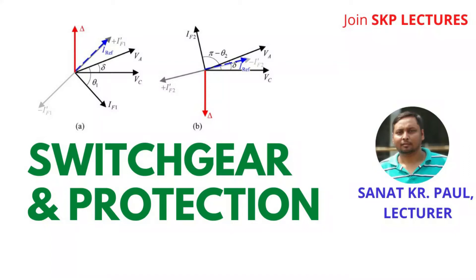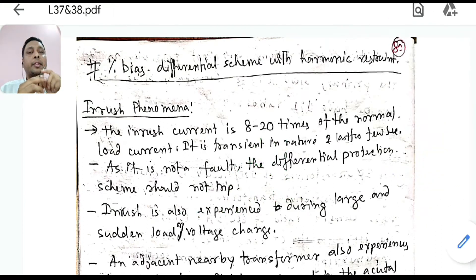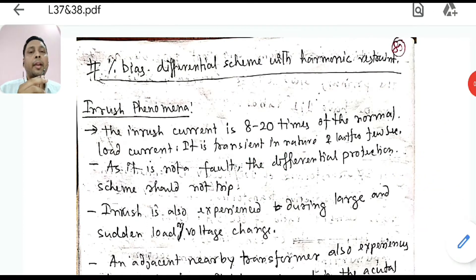If you are new to the channel, subscribe and press the bell icon for further notifications. Welcome to lecture 38 of this switchgear protection course. Today we are going to see the percentage bias differential scheme with harmonic restraint.